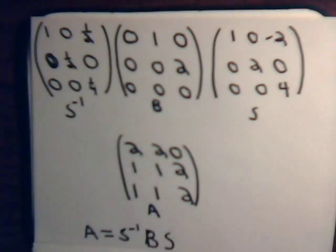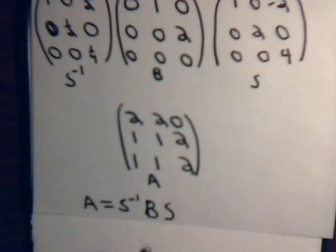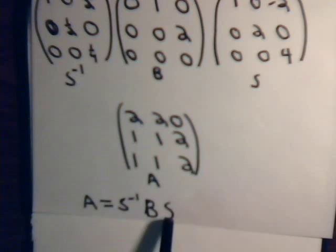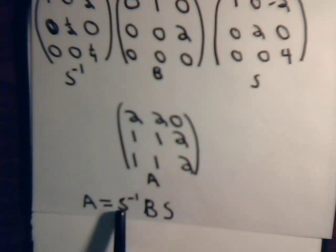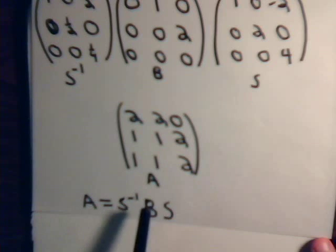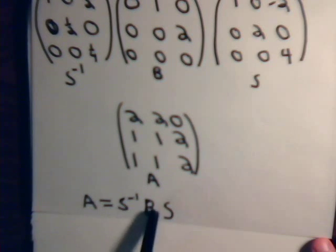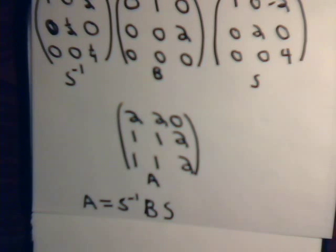Matrix A equals matrix B times some non-singular matrix on its right-hand side and the inverse of that non-singular matrix on the left side. Matrix A and matrix B are said to be similar, and there are a lot of important properties that similar matrices have which we'll discuss in future videos.